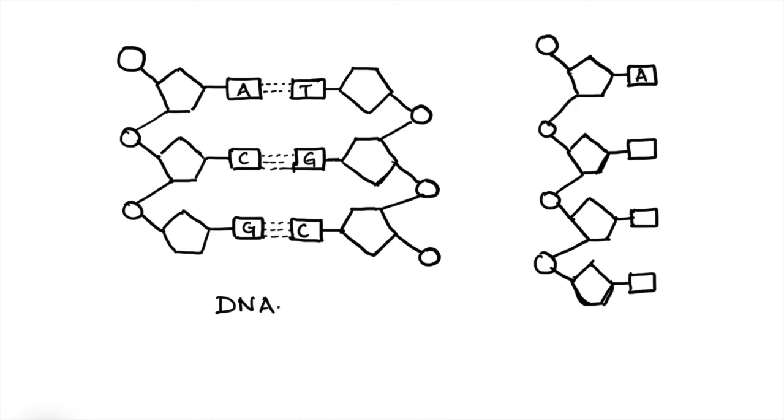However, the RNA has only one chain and in this the bases show difference in the form that instead of thymine there is uracil present. So here we have drawn the structure of DNA and RNA by using circle, pentagons and squares.